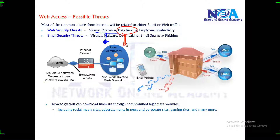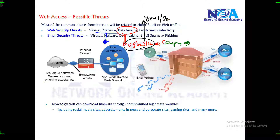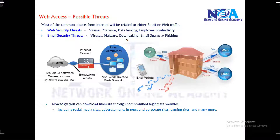There are also data leakage issues. In a company network, you don't want any employee uploading files to personal email accounts or third-party services like Dropbox or MegaUpload. We need to restrict such uploads to ensure that data is not leaked outside the company. This applies to email as well.